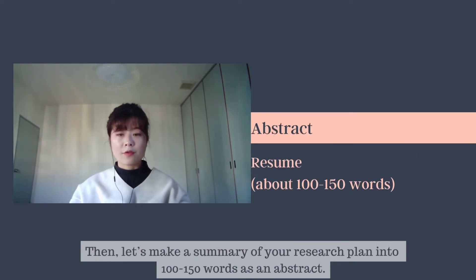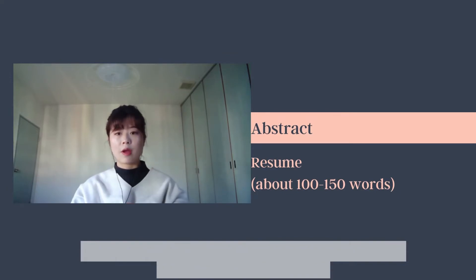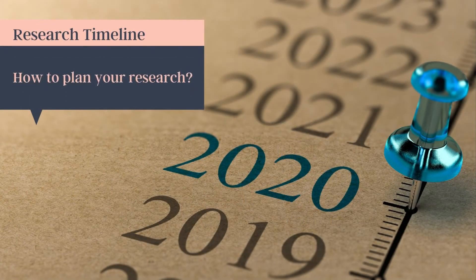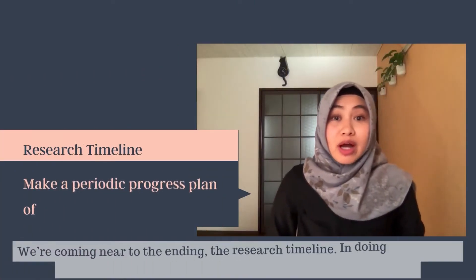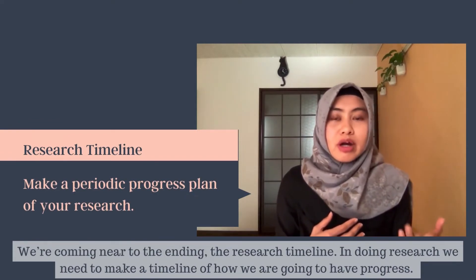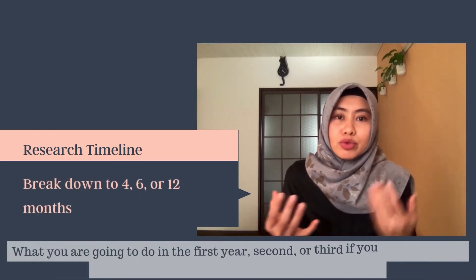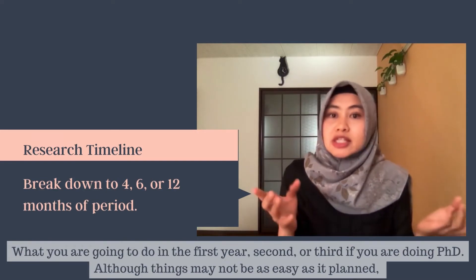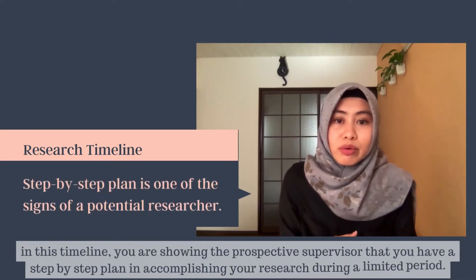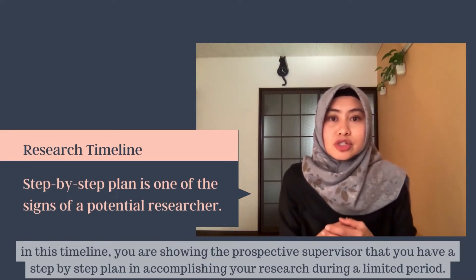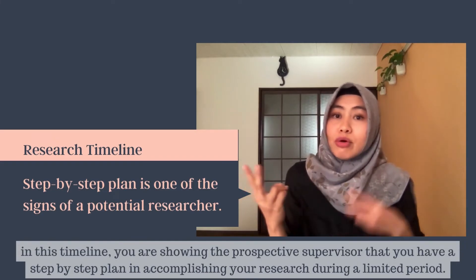Then let's make a summary of your research plan into 100 to 150 words as an abstract. Since it is a proposal, an abstract should only consist of a short summary of your background followed by motivation and your proposed method. We're coming near to the end — the research timeline. In doing research, we need to make a timeline of how we are going to make progress: what you are going to do in the first year, in the second year, or in the third year if you are doing a PhD. In this timeline, you're showing the prospective supervisor that you have a step-by-step plan for accomplishing your research during a limited period of two or three years.